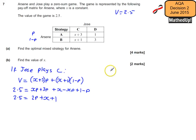Let's also have a look at if Jose plays D. If he plays D, that's a little bit simpler because we haven't got expressions here, we've got actual numbers. So our expected value for Arson is going to be 1 times P, which is P, plus 3 times (1 - P). And we know the value of our game is 2.5, so 2.5 is going to be equal to P + 3 - 3P.